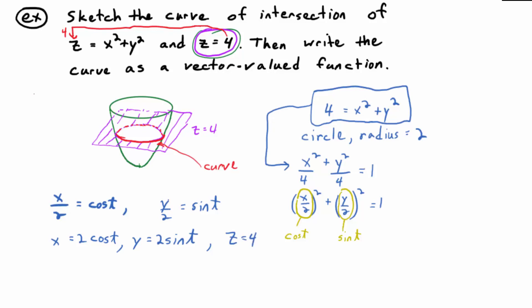So if you want to write your vector valued function, you get r of t is equal to two cosine t, two sine t, and four.